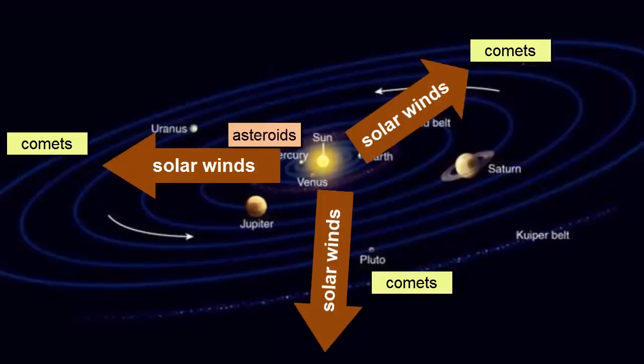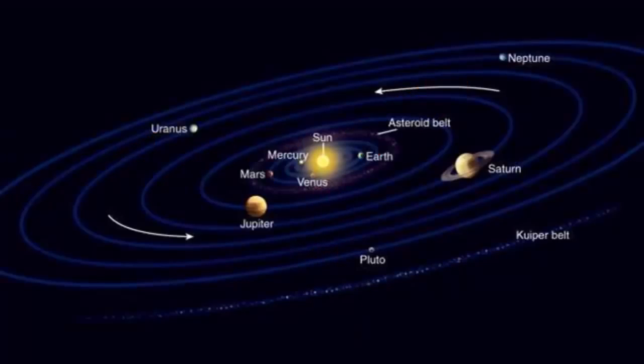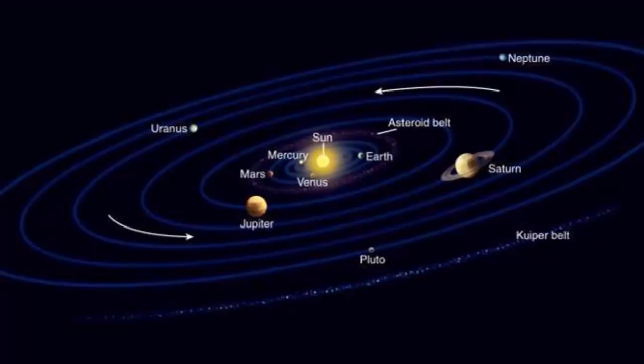Eventually the planets swept up all the debris within their orbits, and nearby debris that would have been attracted to their gravity, and the solar system we're familiar with today formed. How do we know?